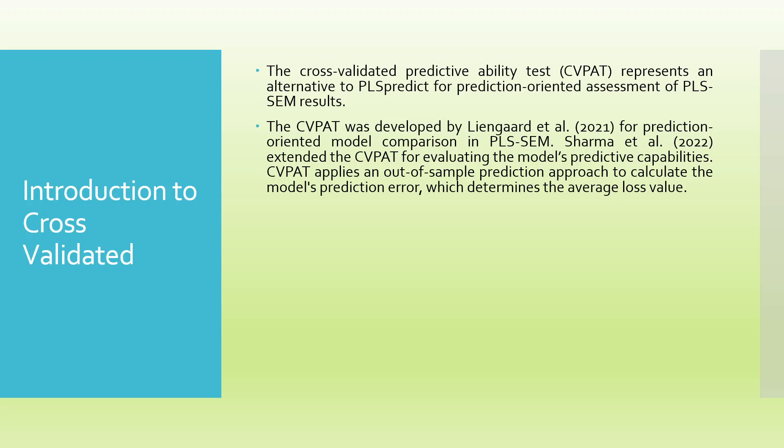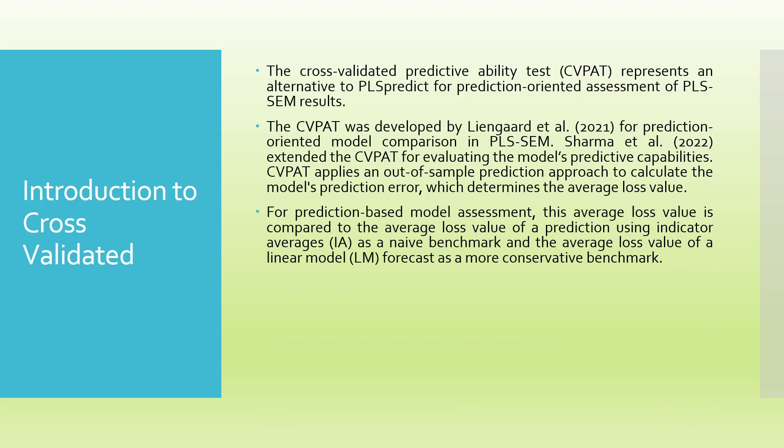CVPAD applies an out-of-sample prediction approach to calculate the model's prediction error, which determines the average loss value. For prediction-oriented model assessment, this average loss value is compared to the average loss value of the prediction using indicator averages as a benchmark, and the average loss value of the linear model forecast as a more conservative benchmark.